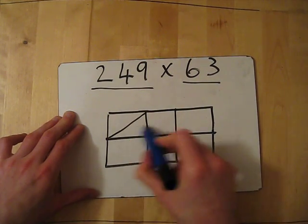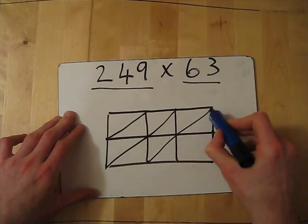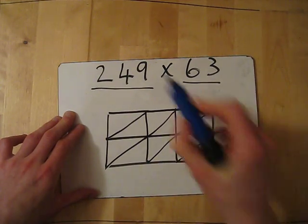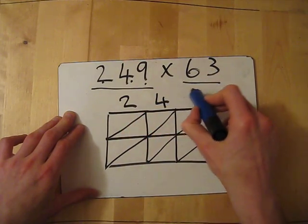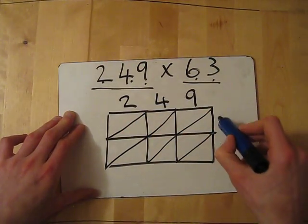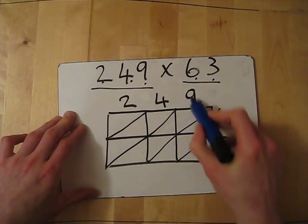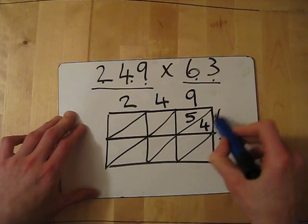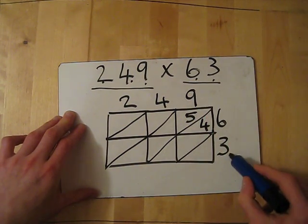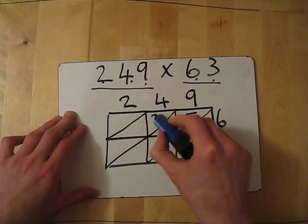Then, I split every single square in half diagonal. Then, I just write the digits across the top. 2, 4, 9 and then down the side, I write 63. So, in this here box, it will be 9 times 6 which gives me 54. This box, 9 times 3, 27. This box, 4 times 6, 24.